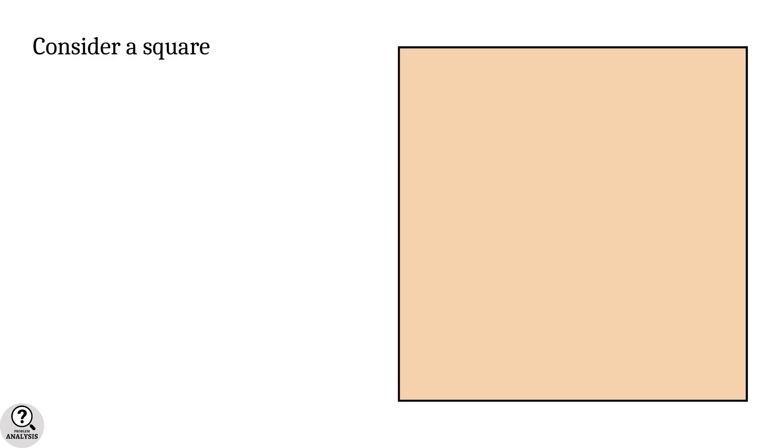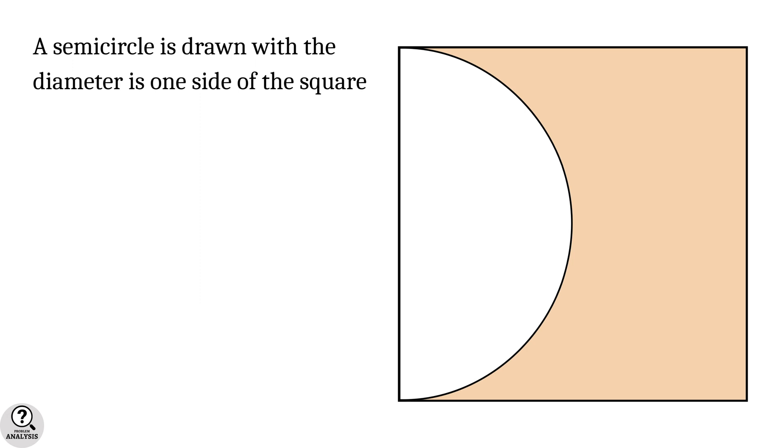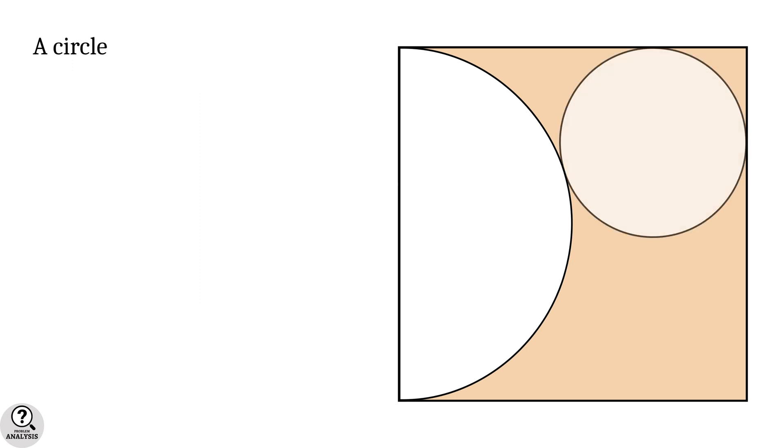Consider a square. A semicircle is drawn with the diameter is one side of the square. Now a circle is constructed that touches the semicircle and two sides of the square. Suppose the radius of the semicircle is given as two units. Then my problem is, what is the radius of the circle?